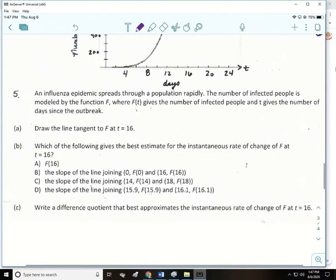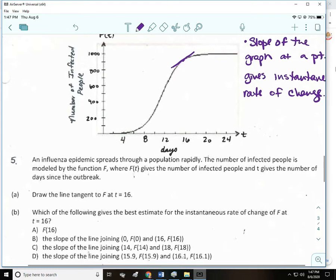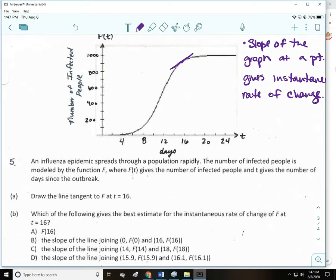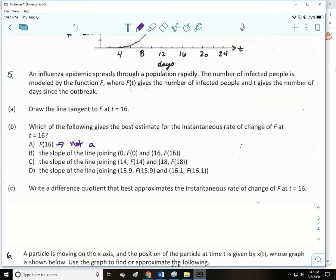Let's look at letter B. Which of the following gives the best estimate for the instantaneous rate of change of F at T equals 16? F of 16 tells you how many people have the virus on the 16th day, so this is not even a rate of change, so that's definitely not a good example. The other three are the slope of the line between 0, 0 and 16, 16, the slope of the line between 14, F of 14 and 18, F of 18, and then the same thing. So those are all slopes, those are all average rate of change, those are all rates of change.